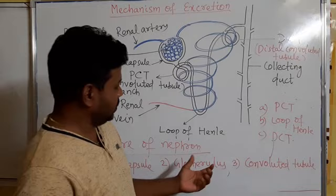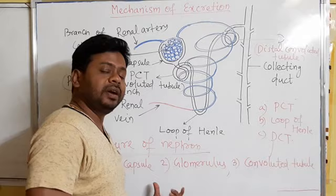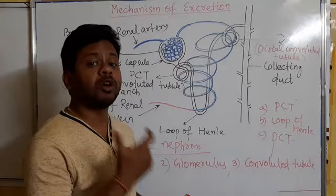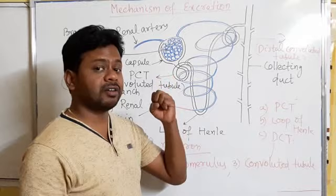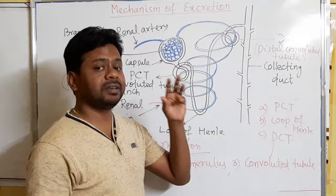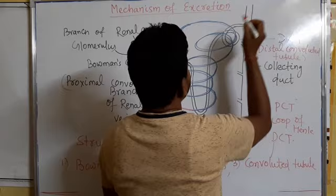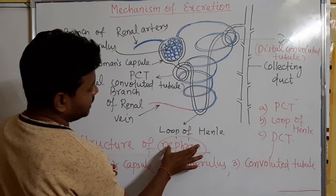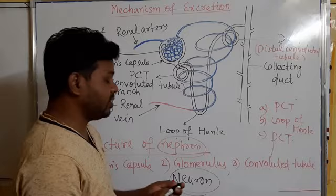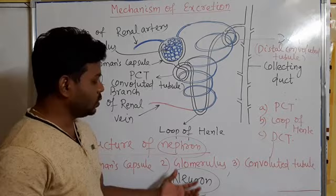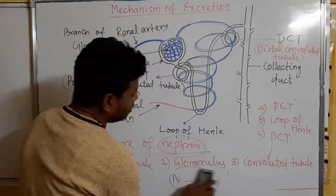This is the structure of a nephron. Students, I am repeating an important clarification: nephron is the filtration unit present in the kidney, whereas another word is neuron. Neuron and nephron are sometimes confusing for students. Neuron — spelled N-E-U-R-O-N — is the nerve cell present inside the nervous system, present in the brain and spinal cord, which we will read about in control and coordination. So don't confuse the word nephron with neuron.